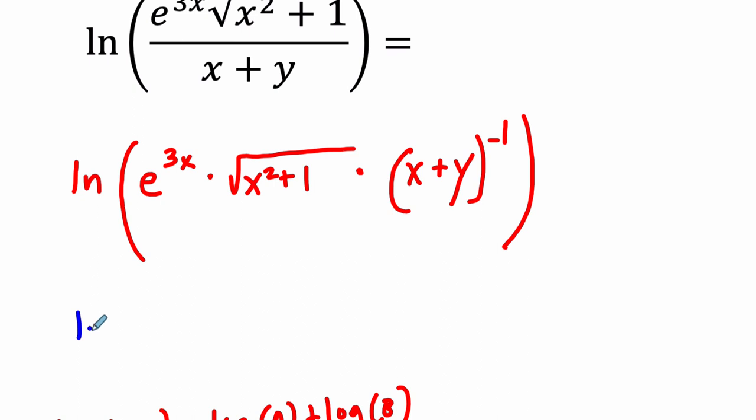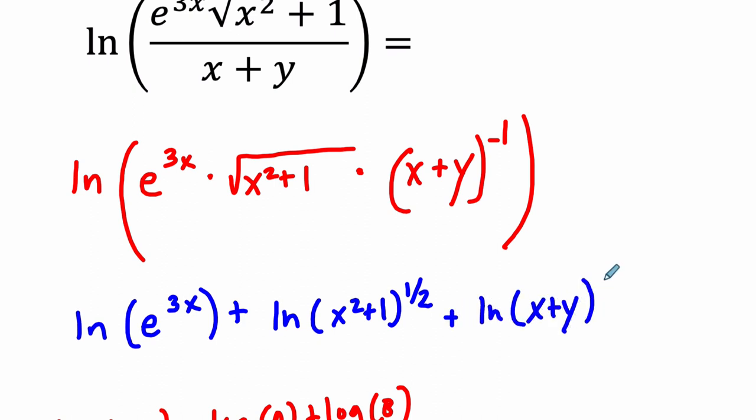Well, this is going to be the natural log of e to the 3x. That'll be my first term. Plus the natural log of x squared plus 1. I'll write it as x squared plus 1, but I'll put it to the 1 half power. That'll help us. The 1 half power is the square root, by definition, plus the natural log of x plus y to the negative first. All right. So I can clear this off if we use that law.